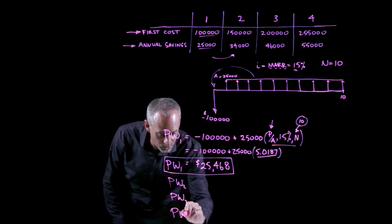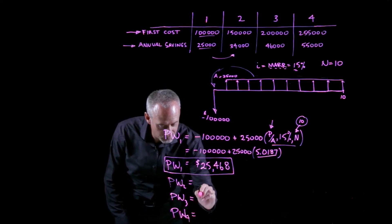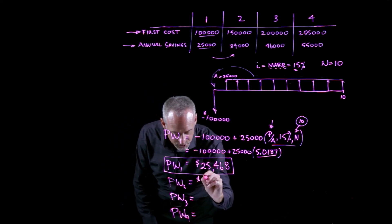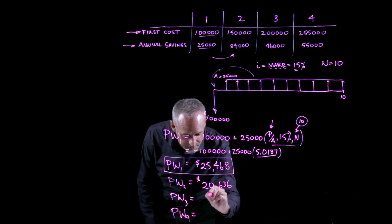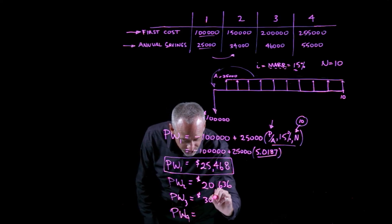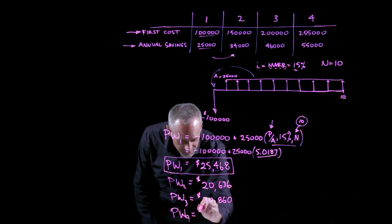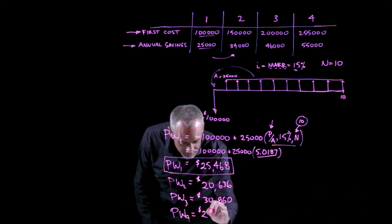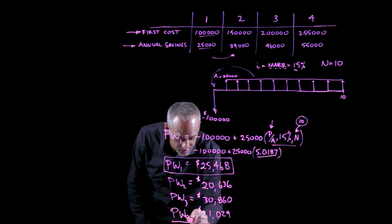So the present worth of each of these other projects, if I do the same calculation, end up at $20,636 for project 2, for project 3, or alternative 3, end up with $30,860, and $21,029 for alternative 4.